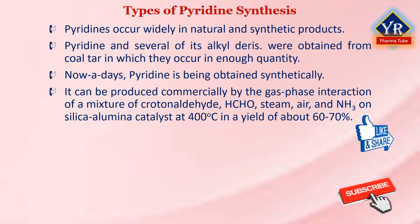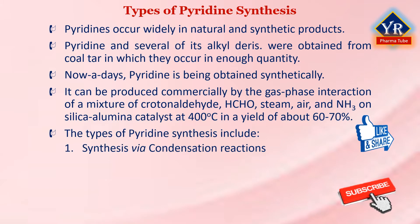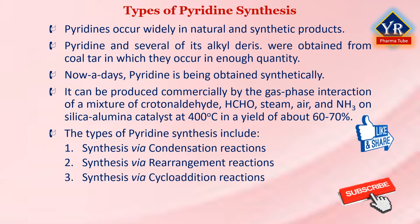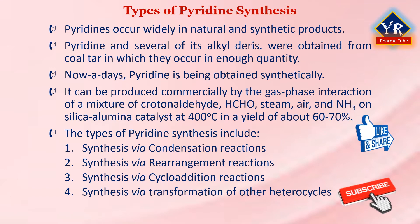The various methods of synthesis of pyridine and its derivatives are discussed under the following headings: Number 1, synthesis of pyridine via condensation reactions; Number 2, synthesis via rearrangement reactions; Number 3, synthesis via cycloaddition reactions; Number 4, synthesis via transformation of other heterocycles; and Number 5, miscellaneous methods of preparation. In this lesson, we learn the first type of pyridine synthesis via condensation reactions.